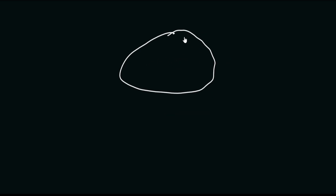If we take a conductor and give it a charge Q, let's take a small patch. Let the area of this cross section be ΔA. And if the surface charge density is sigma, then the charge of this patch will be equal to sigma ΔA. Now let's say that we want to find the electrostatic force on this patch alone due to the rest of the charges.